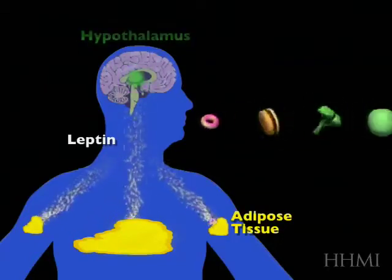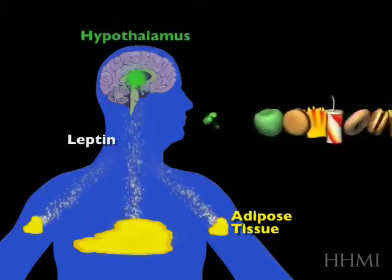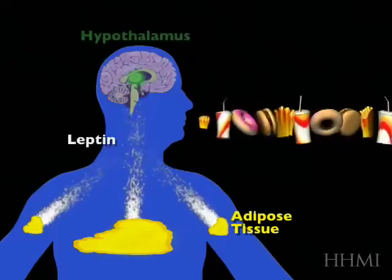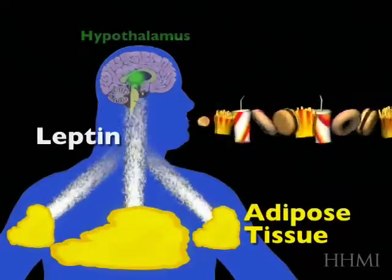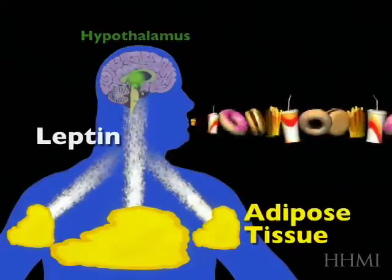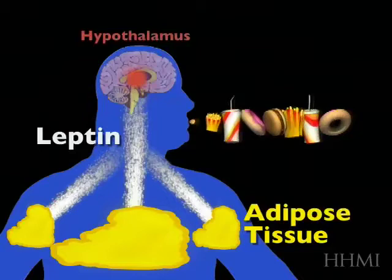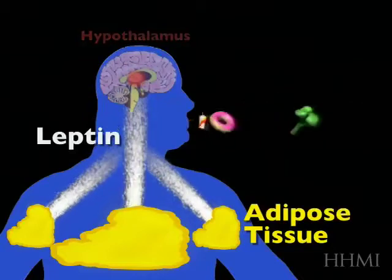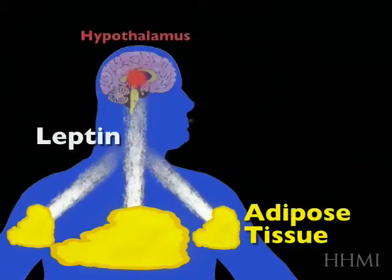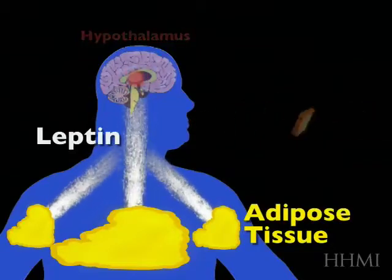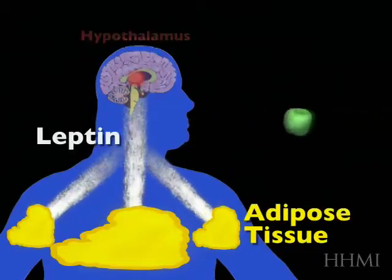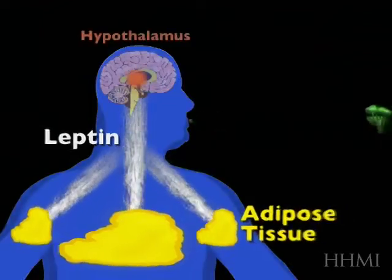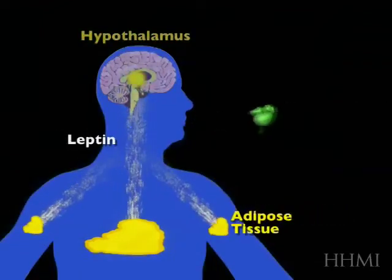Now let's imagine instead that you went on a binge of eating — you spent an extended period of time eating at wonderful restaurants. You would get fatter and make more leptin, which would then suppress your intake again until your weight returned to the starting point.